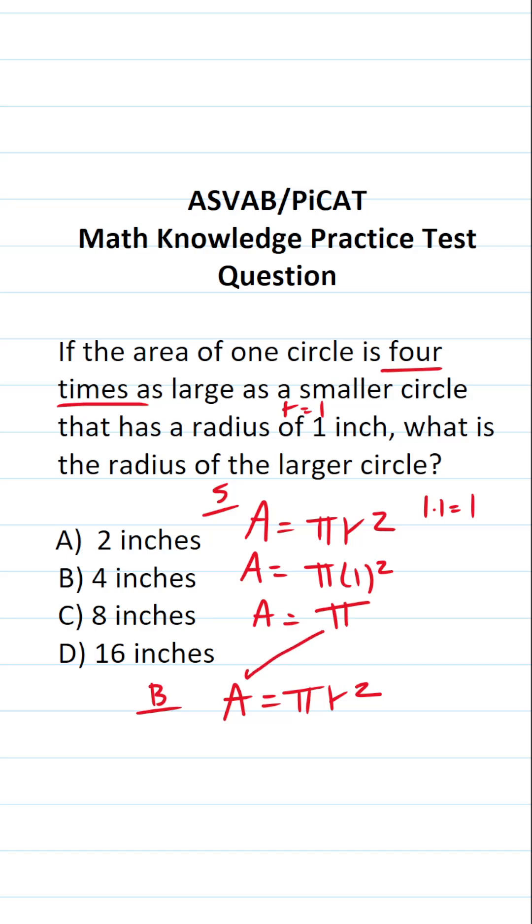That means the area of this bigger circle is going to be 4π. And we want to know the radius of this bigger circle, so this becomes 4π = π r². We want to solve for r, the radius,